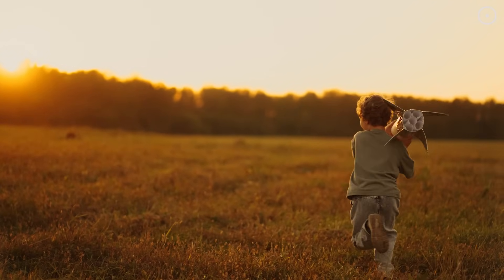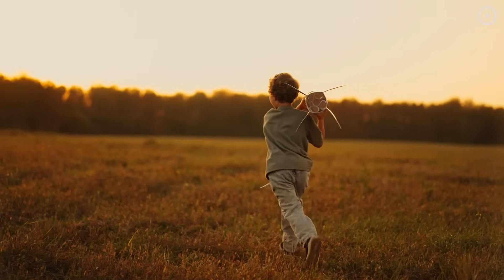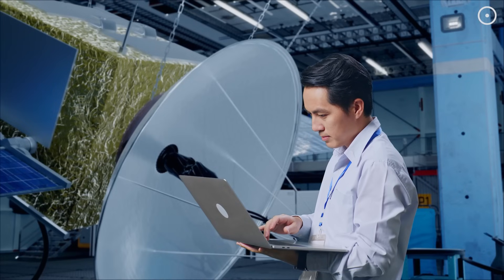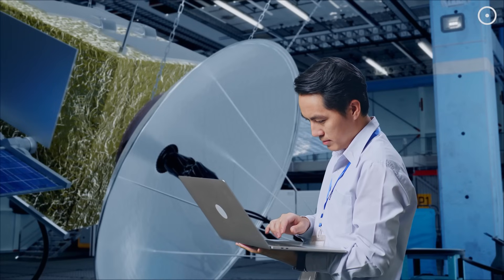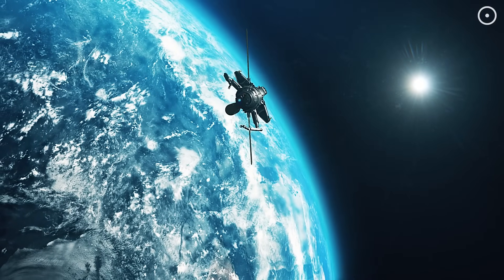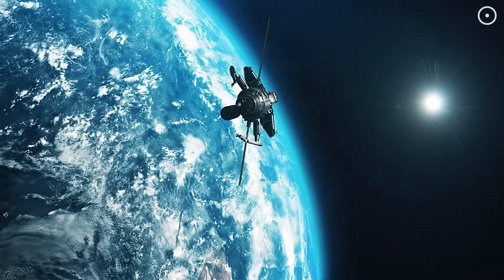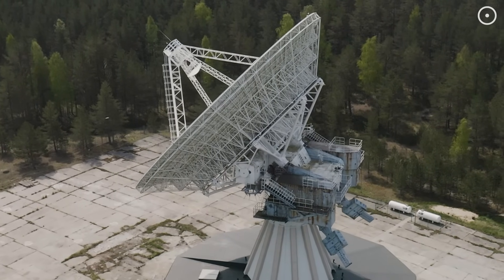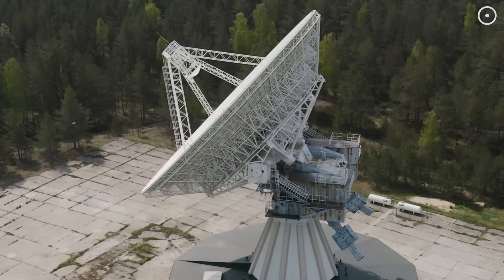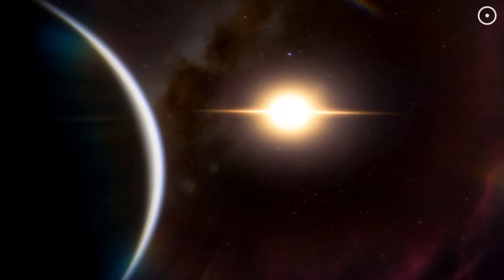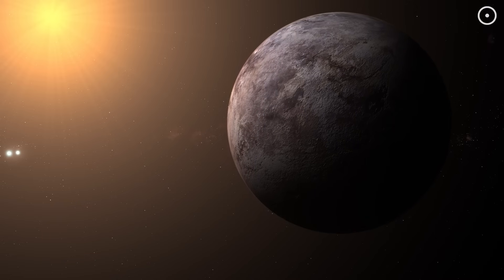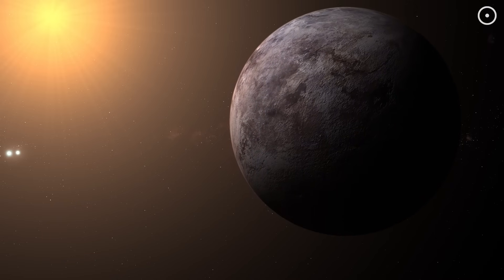Space exploration would be different too. While having two suns wouldn't prevent us from reaching other planets, it would require more complex calculations for space travel. Any spacecraft would need to account for the gravitational influence of both stars. The search for other habitable worlds would take a different path as well. Instead of focusing primarily on single star systems like we do now, we might have developed better techniques for finding planets in binary systems.